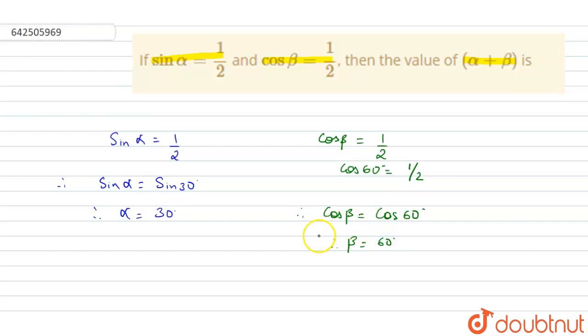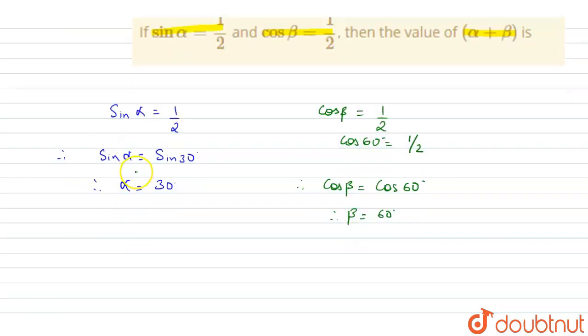Now, we have our value of alpha and beta. So, what do we need to find? We need to find alpha plus beta. As I told you this is an extremely easy sum. We just need to know the respective values of sin alpha and cos beta where we are getting the value as half. So, 30 plus 60 will be 90. This is our final answer. Thank you students.